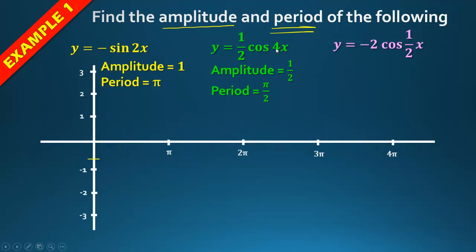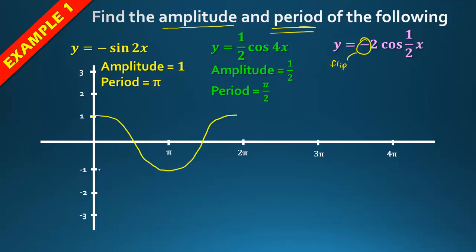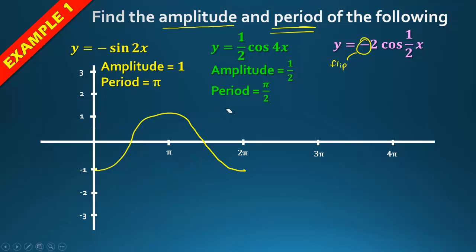For the last period example: y = –2cos(½x). The negative sign flips the cosine graph, so instead of starting high it starts low. The 2 stretches it to between 2 and –2.